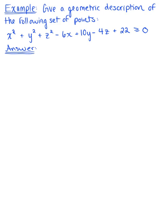Give a geometric description for the following set of points. So we have this big inequality here: x squared plus y squared plus z squared minus 6x plus 10y minus 4z plus 22 is greater than or equal to 0.